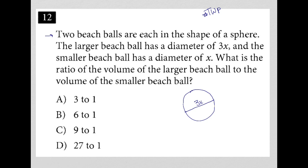And the smaller beach ball has a diameter of x. So here's my smaller ball represented by a circle. Here's its diameter and it's x. What is the ratio of the volume of the larger beach ball to the volume of the smaller beach ball?